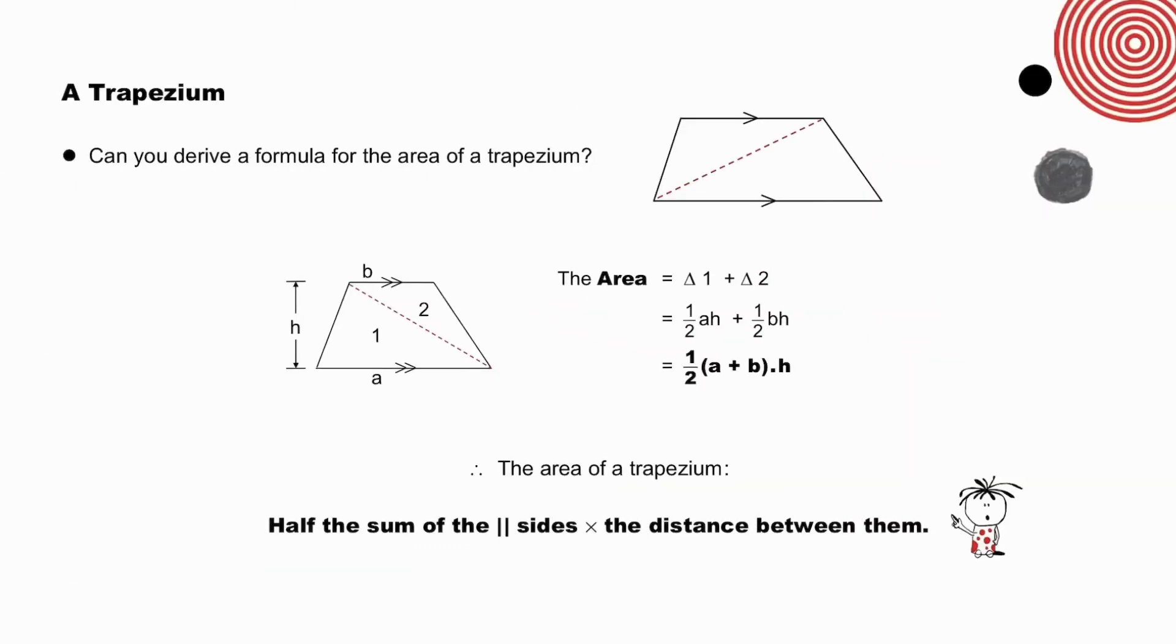Can you derive a formula for the area of a trapezium, again using a diagonal which divides the trapezium into two triangles? Note the parallel sides, a and b, and the distance between them or height, h. The area of the trapezium equals triangle 1 plus triangle 2. A half a times h plus a half b times h, which equals a half times (a plus b) times h, since we have taken out the common factor half and h. The area of a trapezium is therefore equal to half the sum of the parallel sides times the distance between them. Pause to repeat this formula a number of times in words.